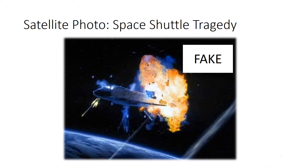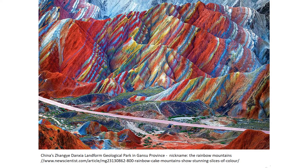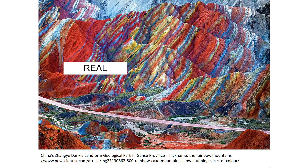Satellite photo of a space shuttle tragedy — what do you think? Fake. Why is it fake? Because it defies logic. It is illogical — how was the picture taken in the first place? Somebody must have been floating in the sky to take this picture. What about this beautiful colorful canyon? It's real. How did I know that? If you look to the bottom, there is a citation, the name of the canyon, and where I can find more information. The reference citation for the picture verifies the truth of the picture.